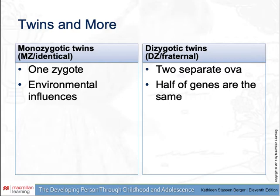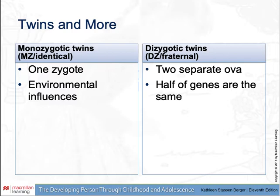Twins are an important area for research. There are two types: monozygotic and dizygotic. Monozygotic twins originate from one zygote that splits apart very early in development; an incomplete split results in conjoined twins. They share the same genotype with slight variations in phenotype possible due to environmental influences. Dizygotic twins result from fertilization of two separate ova by two separate sperm, have half their genes in common, and occur twice as often as monozygotic twins. Their incidence is genetic and varies by ethnicity and age.